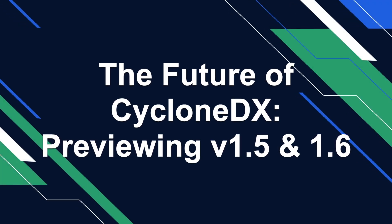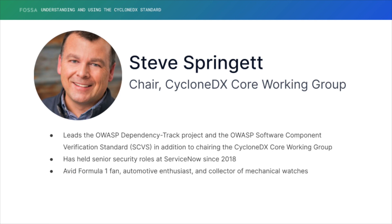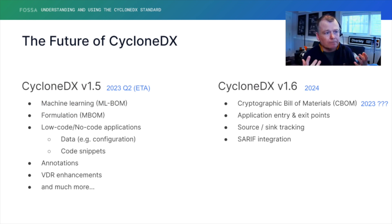We are actively working on CycloneDX. We're currently heads down doing 1.5 development work, and we've got a lot of contributors — especially PhDs in machine learning — helping us out with ML support we're introducing in 1.5. ML transparency has definitely been gaining momentum over the last couple of years, especially in Europe. So ML transparency is coming to 1.5 in Q2.